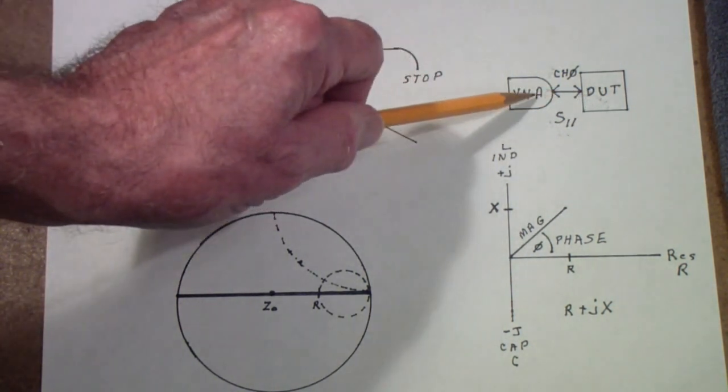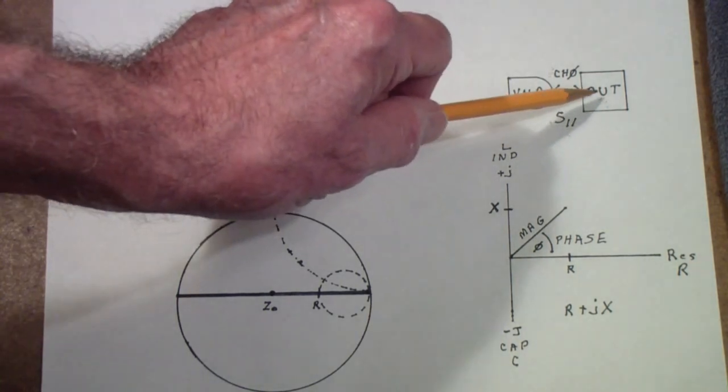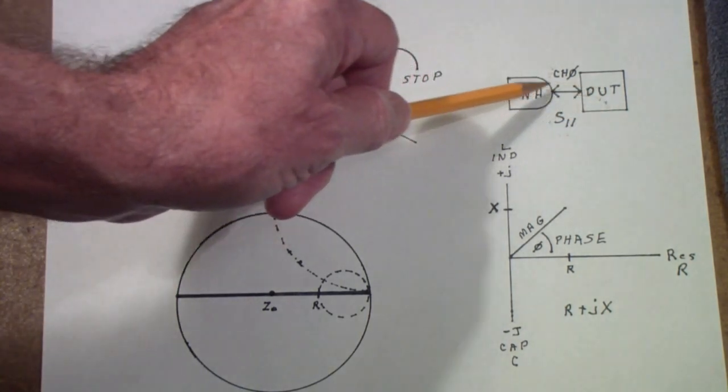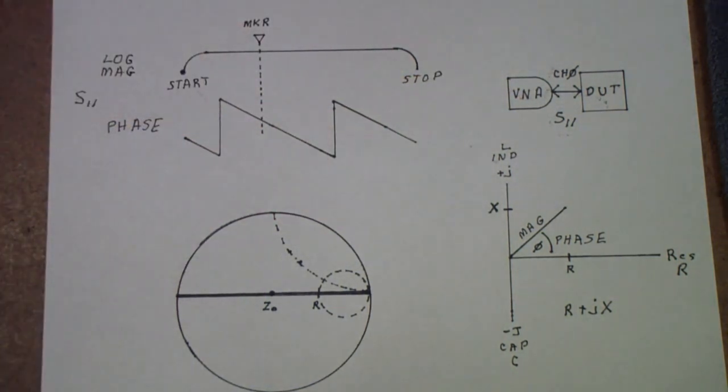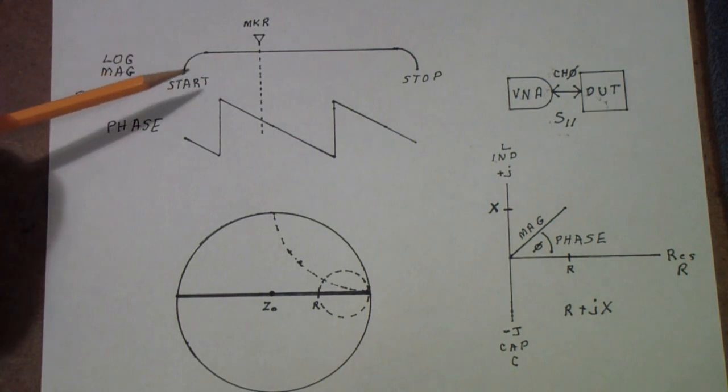But, basically, what you're trying to discover is how much power that goes out of the VNA gets absorbed in the device under test, and how much of it gets reflected back to the VNA. If there is a perfect match, then all of the power will be absorbed and there will be no reflection. And if there's no reflection, that means you have a one-to-one standing wave ratio, for those of you that are amateur radio operators. So, now back to magnitude and phase.